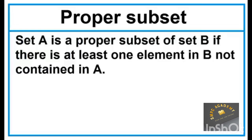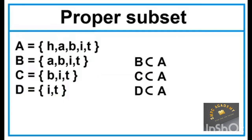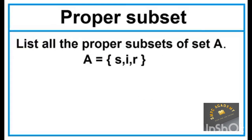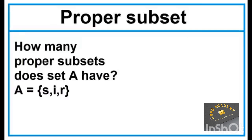Proper Subset: Set A is a proper subset of Set B if there is at least one element in B not contained in A. Given Sets A, B, C, and D — Set B, Set C, and Set D are all proper subsets of Set A. Listing all proper subsets of Set A: sets with 2 elements, sets with 1 element, and number 7 is an empty set. The set itself is not a proper subset of Set A.